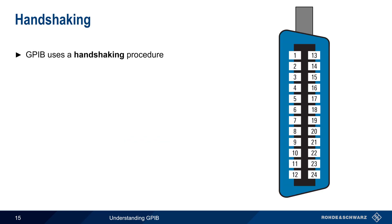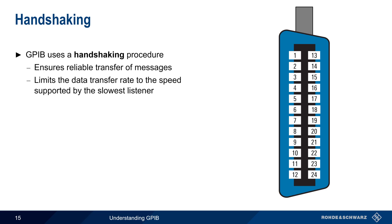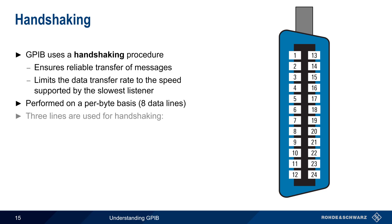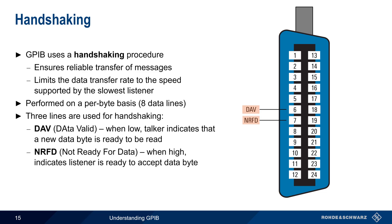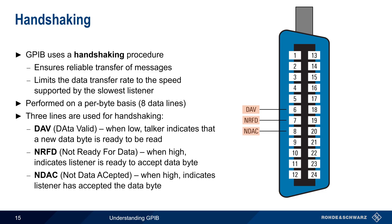Handshaking is an important part of GPIB. It ensures reliable transfer of messages and limits the data transfer speed to the speed supported by the slowest listener. This handshake is performed for every byte transferred over the GPIB bus. Three GPIB lines are used for handshaking. DAV (data valid) is asserted by a talker to indicate that a new data byte has been placed on the data lines and is ready to be read. NRFD (not ready for data) is unasserted by listeners to show that they are ready to accept a new data byte. And NDAC (not data accepted) is unasserted by each listener after it has read the data.